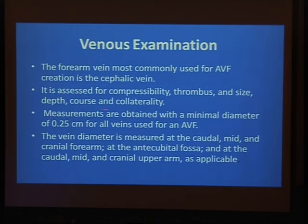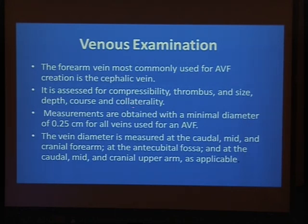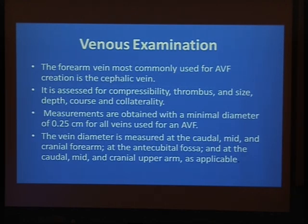The size and depth of the vein must be commented on in the report. If there is any abnormality in the course of the vein, it should be mentioned. If there is any collateral circulation, it may suggest venous obstruction. The vein diameter should be measured at multiple sites — the forearm, the antecubital fossa, and also for the draining vein of the artery.